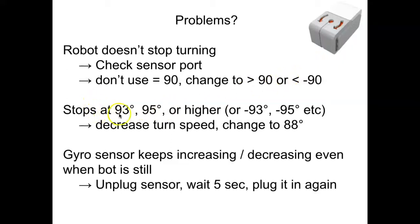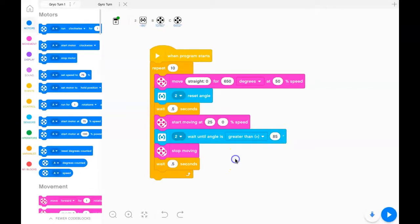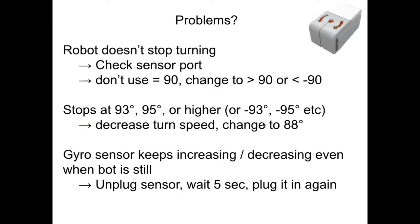As I mentioned earlier, maybe your robot stops at 93 degrees or 95 degrees or higher than that, or the negative counterparts. You could decrease the turn speed. You could change your what's called your sentinel value. In my case, it was the 80, I changed it to 85 degrees. But you could change this number right here, your greater than or less than value—it's called your sentinel value. Or you could change your move speed. Those are two suggested options.